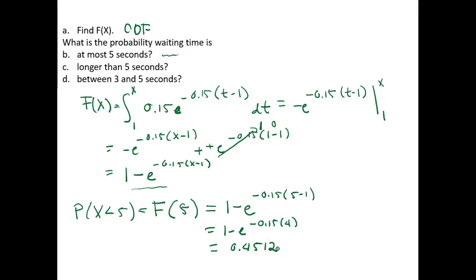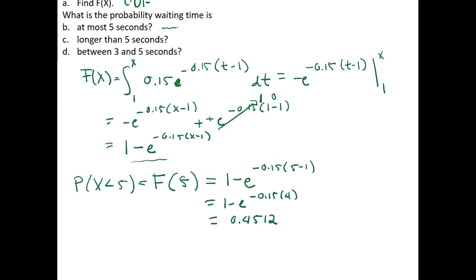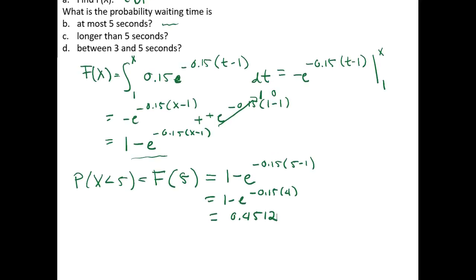So the likelihood that somebody waits at the median line for 5 or fewer seconds is 0.4512. Next, we want to know the probability that the waiting time is longer than 5 seconds.